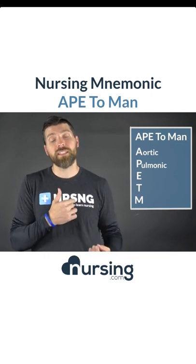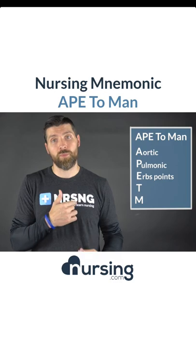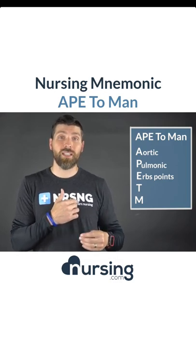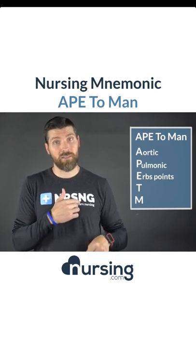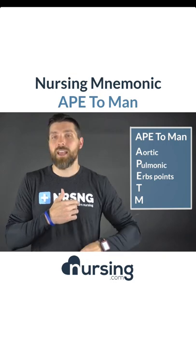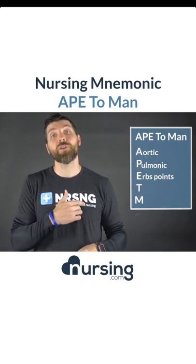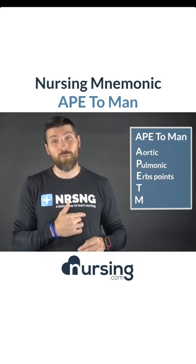The next thing we want to listen to is something called Erb's Point. Erb's Point is directly beneath the pulmonic auscultation location, and that's in the third intercostal space — so you move down one more.